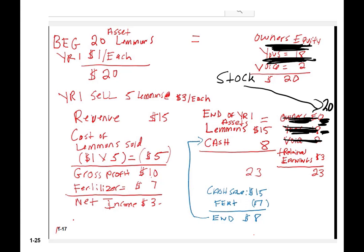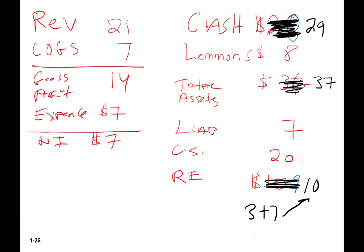Some costs recognized in net income don't use up cash the same way. We have revenue of $21, cost of goods sold of $7, gross profit of $14. Since the lemon tree didn't die last year, we go back to the fertilizer store for another $7 bag of fertilizer. This time, the fertilizer guy says, 'Pay me next year — take the bag now and pay me next year.' So we take the fertilizer and don't pay cash for it.